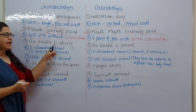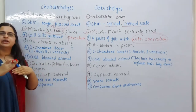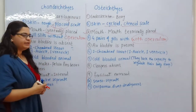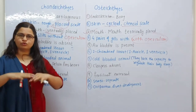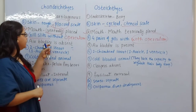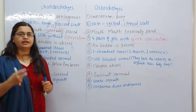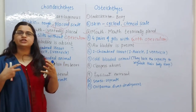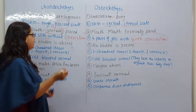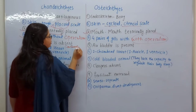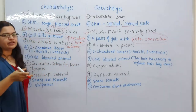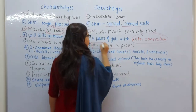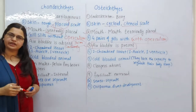In Chondrichthyes, the air bladder is absent. The air bladder helps maintain buoyancy. Because the air bladder is absent in Chondrichthyes, they have to continuously swim in order to avoid sinking, since they have no air reservoir. On the other hand, in Osteichthyes, the air bladder is present, so they do not sink.